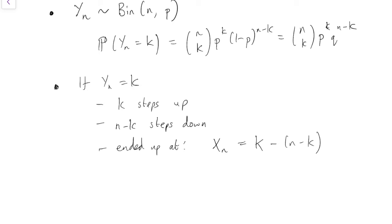So I've gone up k, down n minus k, to get to k minus (n minus k), which is 2k minus n if we expand out the brackets.